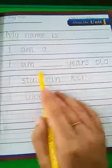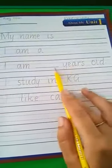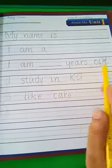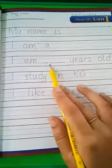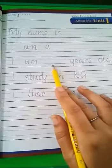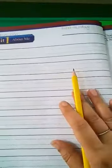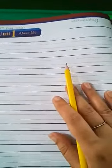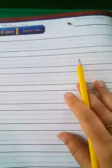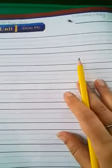You have to write 'I am five years old,' 'six years old,' or 'four years old.' I study in KG. I like cake. Then the next page, page number 60, you have to write a few sentences about yourself by yourself on this page. Do the work neatly and nicely.